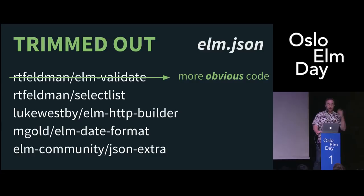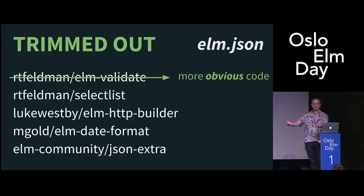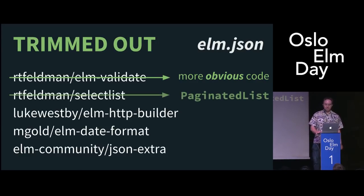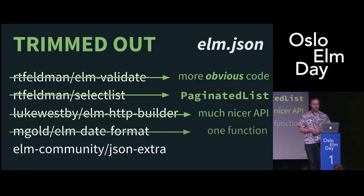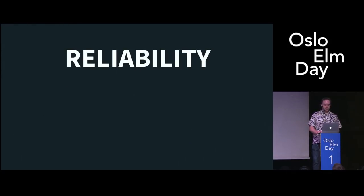In summary: elm-validate got replaced with more obvious code for validation — now I can look at it and see there's no callout to third-party stuff. SelectList became PaginatedList. HTTP builder got replaced with this nicer API. Elm date format got replaced with one function. And JSONExtra was just superfluous.